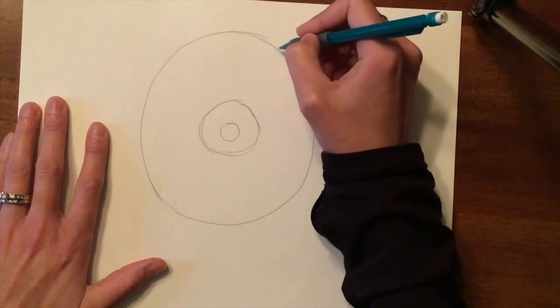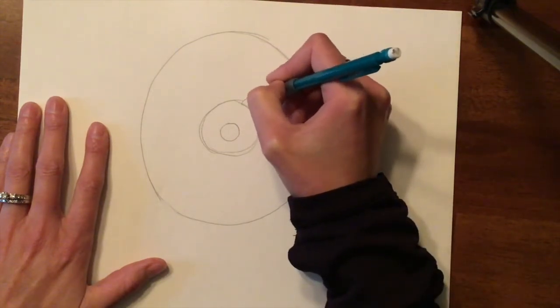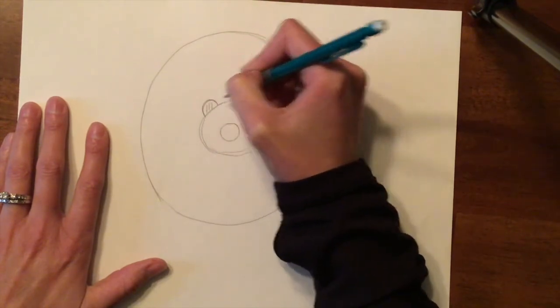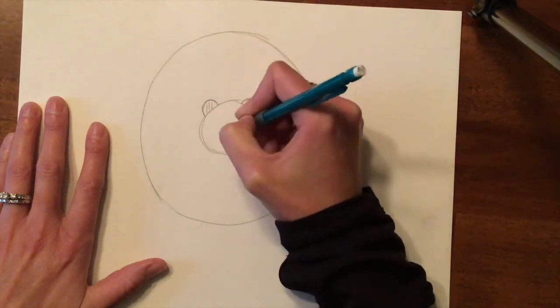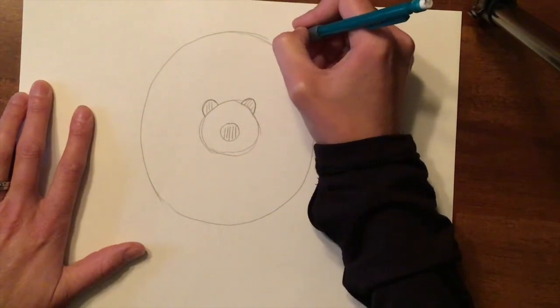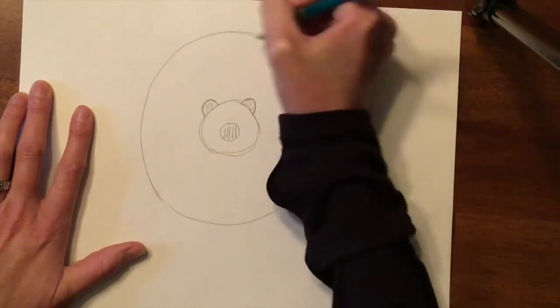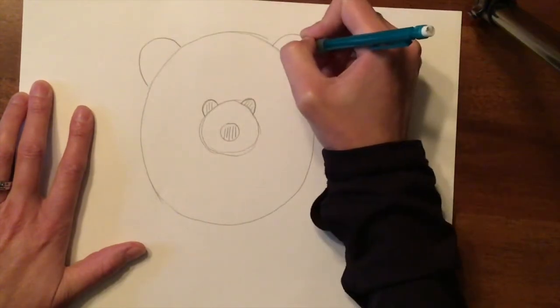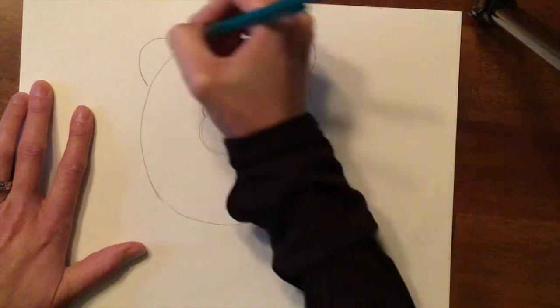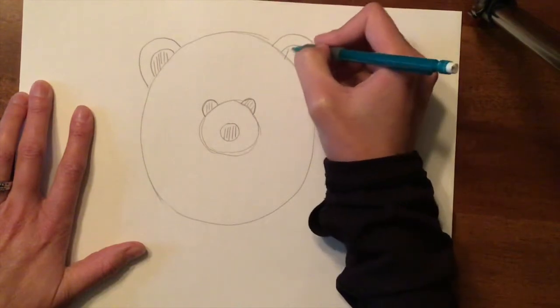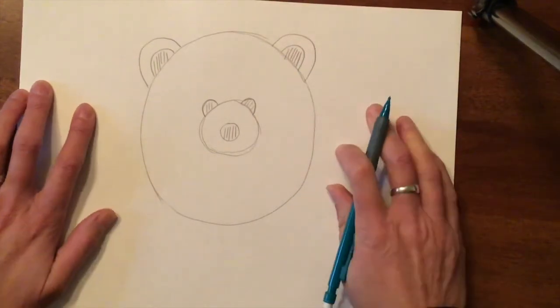Now up here, you're going to make a half circle and a half circle. So this is going to end up being your eyes. This is going to be your nose. And then up here, half circle, half circle. And inside of that, half circle, half circle. I told you we were going to be working a lot with circles and half circles today. All right. So this is our bear's head.